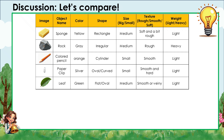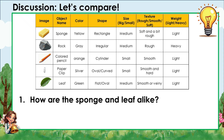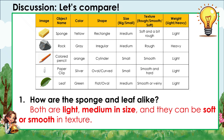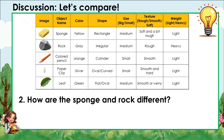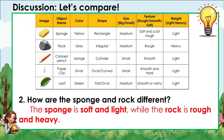Let's compare! Based on the table, Question 1: How are the sponge and the leaf alike? Both are light, medium in size, and they can be soft or smooth in texture. Question 2: How are the sponge and rock different? The sponge is soft and light, while the rock is rough and heavy.